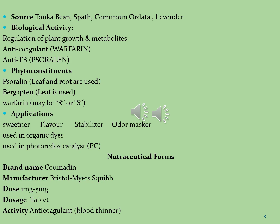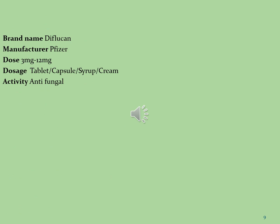Coumarins are used in formulation and evaluation of different pharmaceutical dosage forms. The first brand is Coumarin, manufactured by Bristol-Myers Squibb, with dose of 1 mg to 5 mg per day in tablet dosage form, with anticoagulant (blood thinner) activity. The second brand is Diflucan, manufactured by Pfizer, with dose of 3 mg to 12 mg per day, formulated in tablet, capsule, syrup, and cream dosage forms, used as an anti-fungal agent.